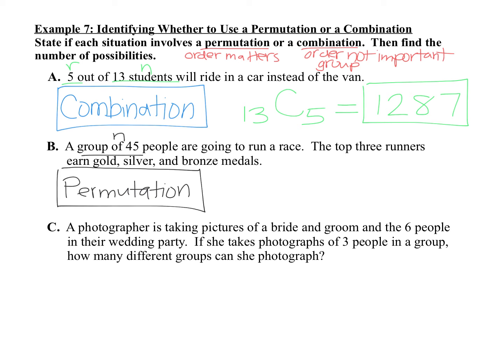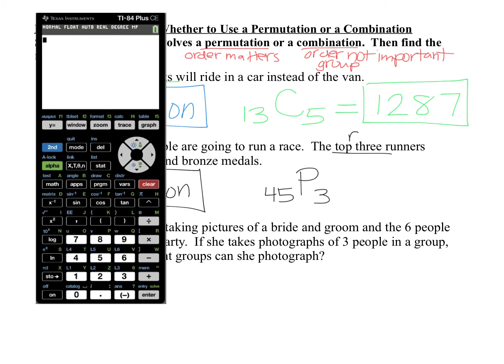There's a total of 45 people, so that's our N. And then the top 3 runners, so R is 3, get the gold, silver, and bronze medals. That means we have 45P3. And once again, we can put that into the graphing calculator. On the calculator, type your N value of 45, then click the math button, arrow over to probability, and choose NPR, which is choice 2 here. And now I can fill in my 3. 45P3 ends up being 85,140.